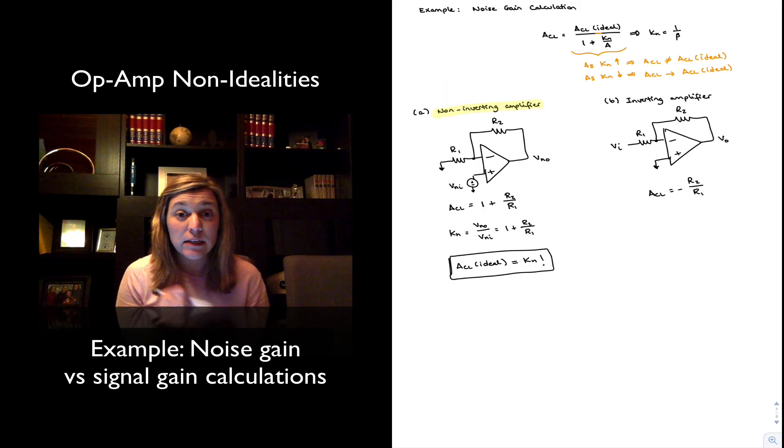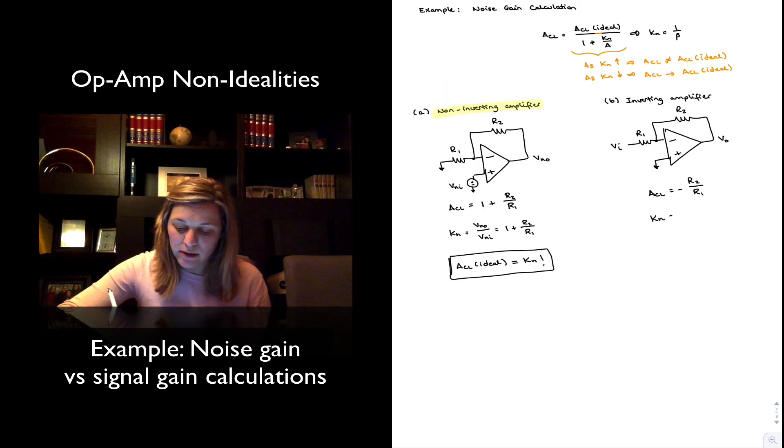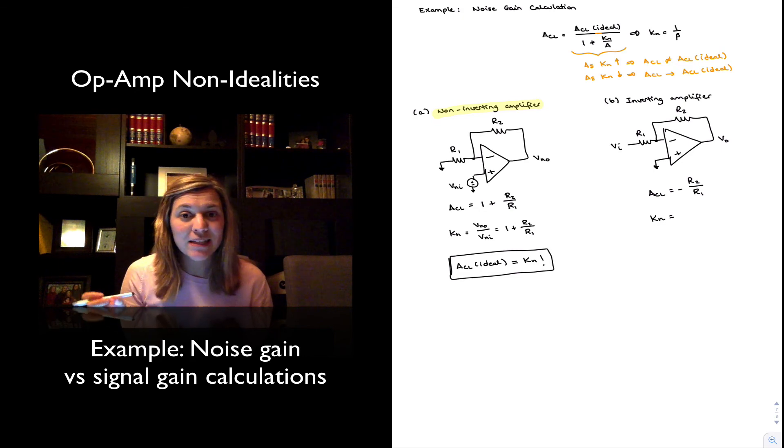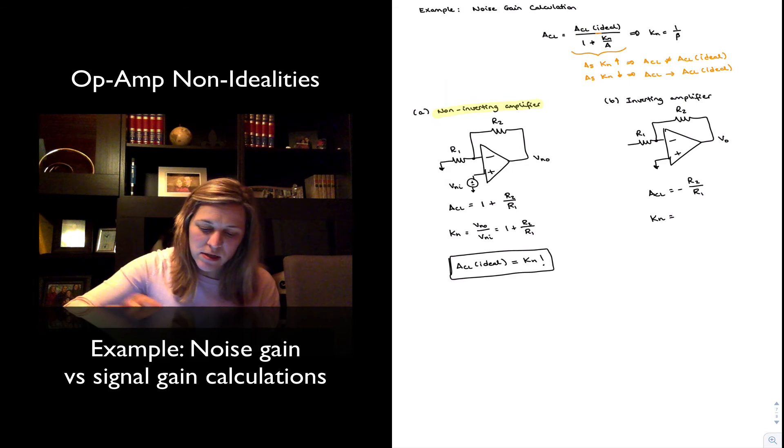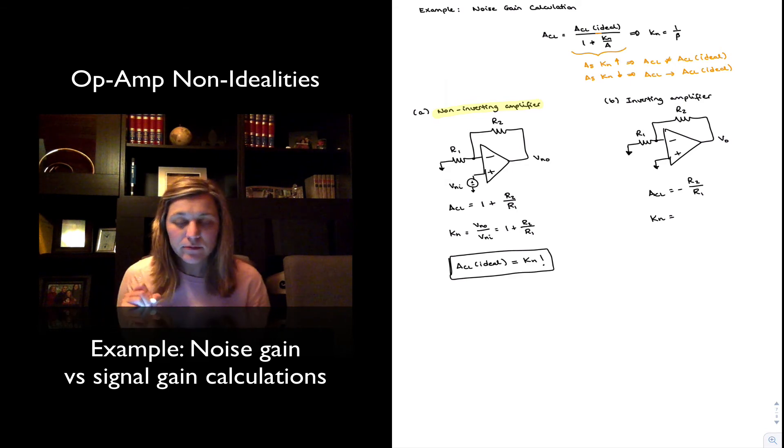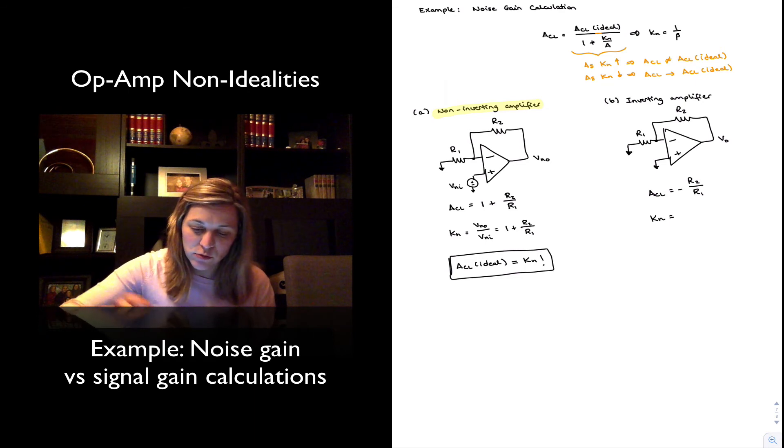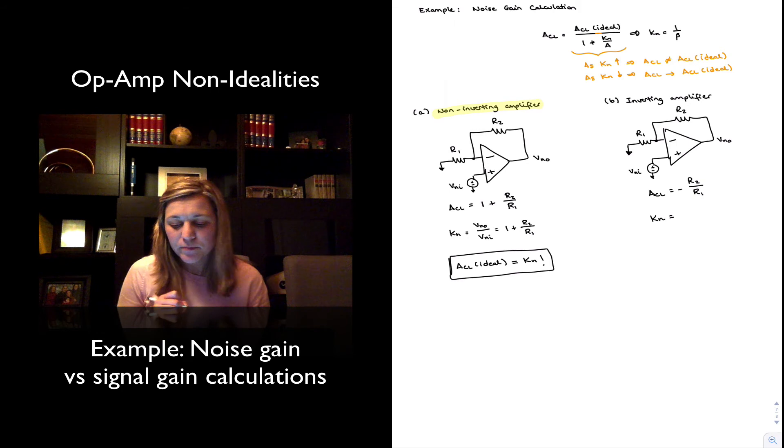Now let's go ahead and calculate my noise gain. In order to calculate the noise gain for this amplifier, I need to step one, de-energize my signal sources. So I go ahead and de-energize Vin. And now I need to apply a test noise signal at the non-inverting input. Vnoise input, for which I will get an output, a Vnoise output. So my noise gain is going to be the ratio of the two.